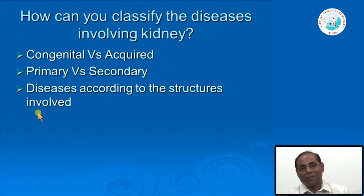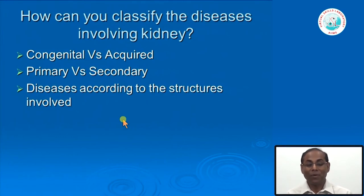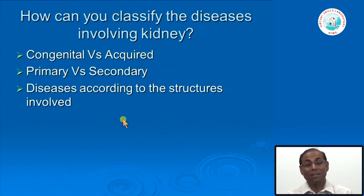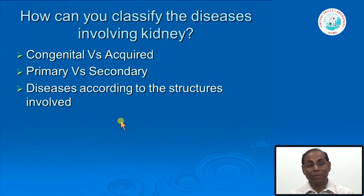When we think about diseases involving the kidney, the simplistic way to classify them pathologically is to ask whether they are congenital or acquired. In the kidney too, some diseases are congenital and some are acquired. We can also classify diseases as primary versus secondary.